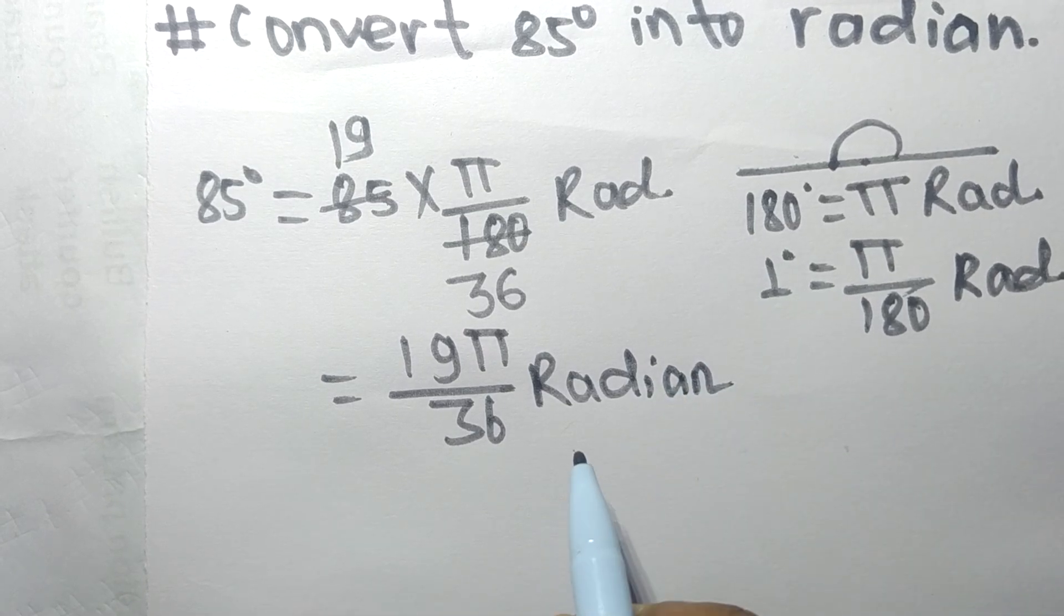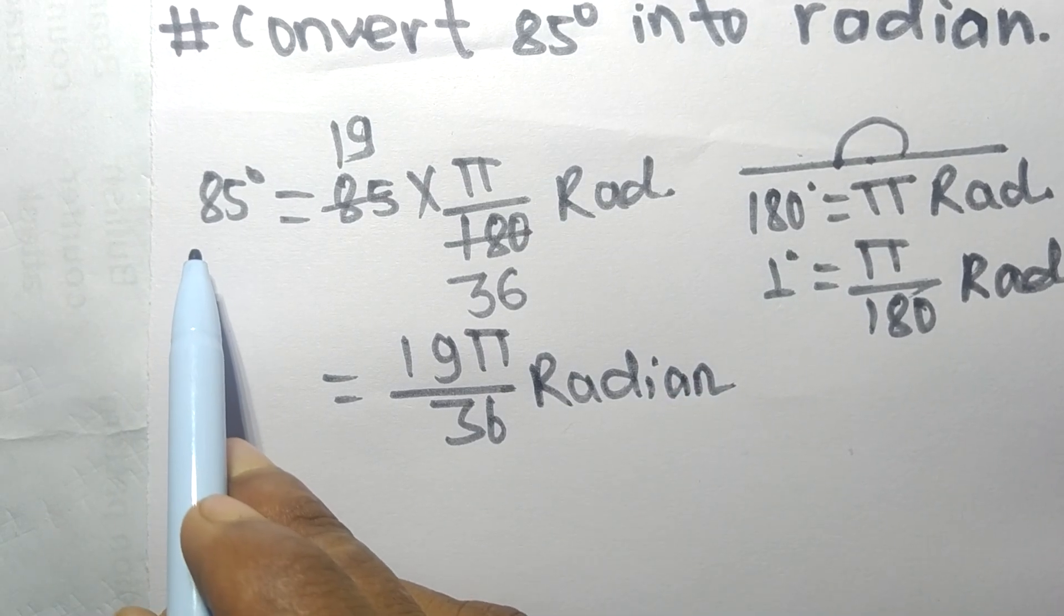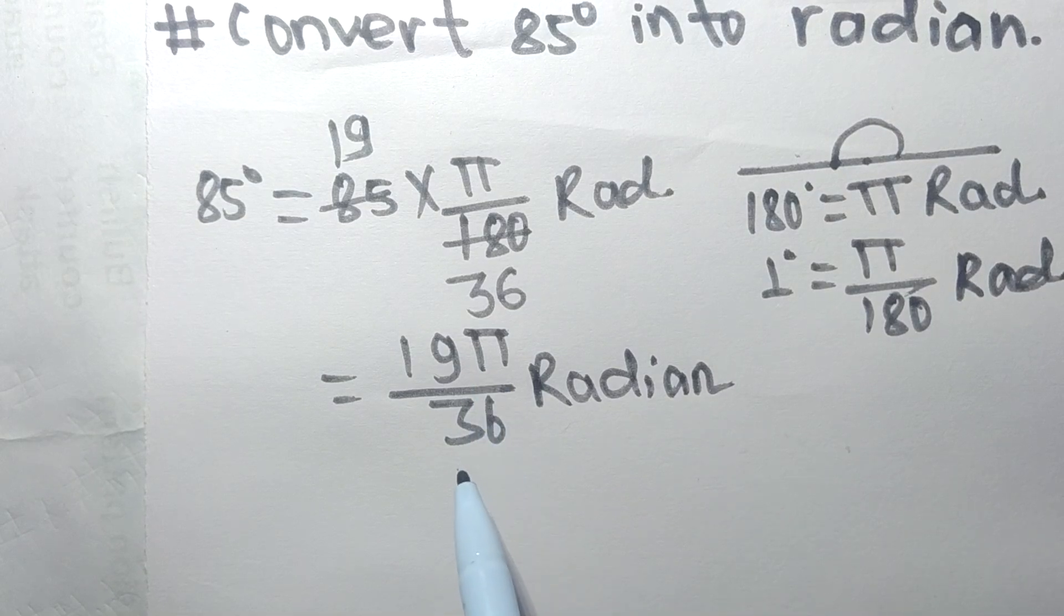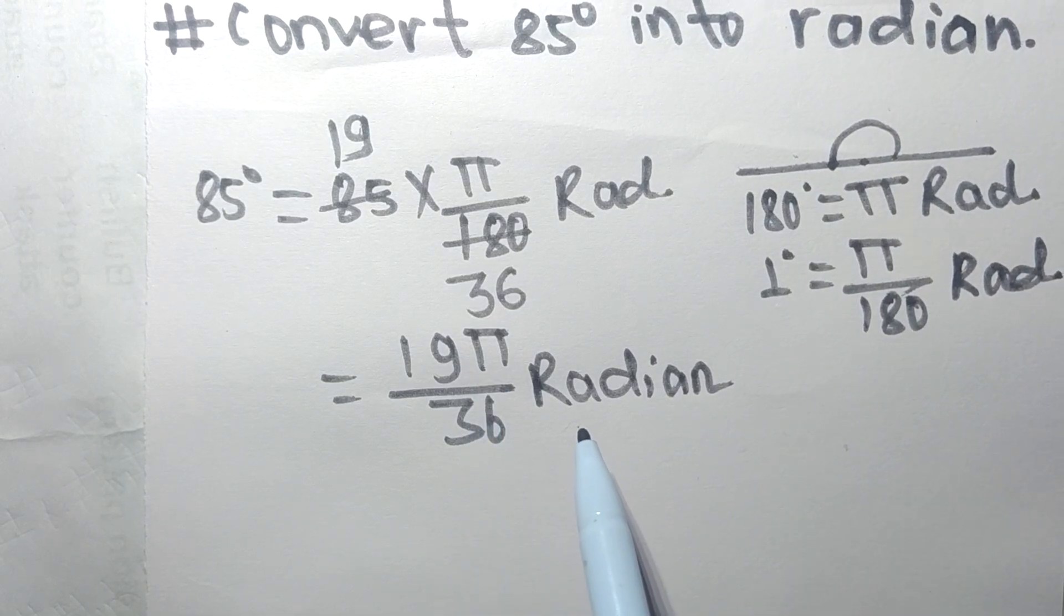Therefore, 85 degrees equals 19π/36 radians. That's all for today. Thanks for watching.